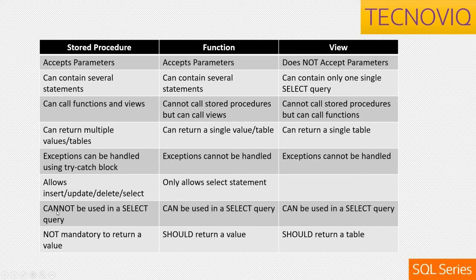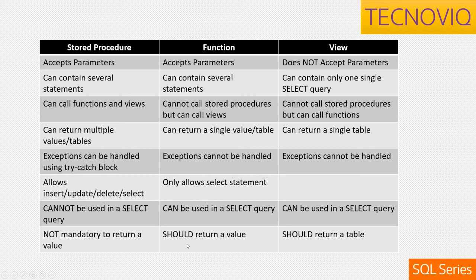Another difference: a stored procedure cannot be used in a SELECT statement — please write in the comments how you execute a stored procedure. A function, on the other hand, can only be used in a SELECT query, similar to a view. Also, it's not mandatory for a stored procedure to return a value, since you may just be inserting or updating data. But for a function, returning a value is the main purpose, and similarly a view always returns data.